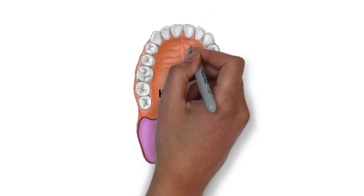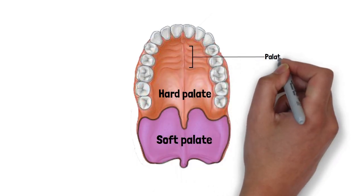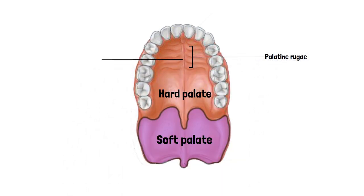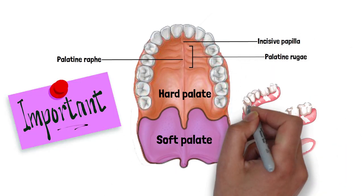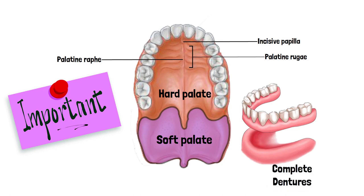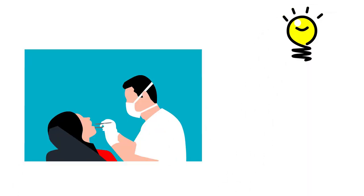The hard palate in the oral cavity possesses numerous transverse palatine folds known as palatine rugae, and a median longitudinal ridge known as the palatine raphe, which ends anteriorly in a small oval elevation known as the incisive papilla. These landmarks are very important especially when dentists are dealing with complete dentures, because retention of a complete denture is difficult to achieve, and hence knowledge about these landmarks helps to better fabricate a comfortable, retentive denture.